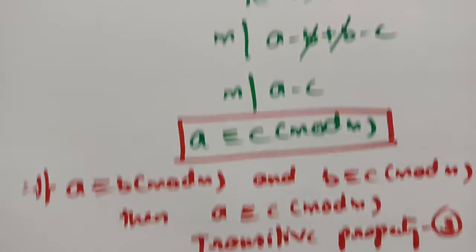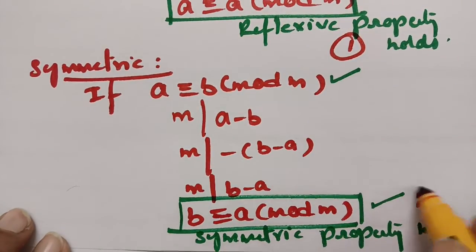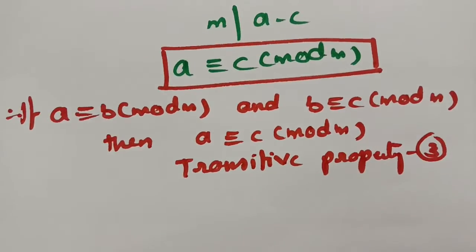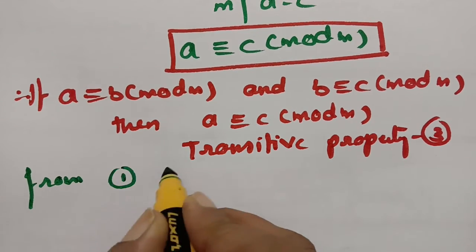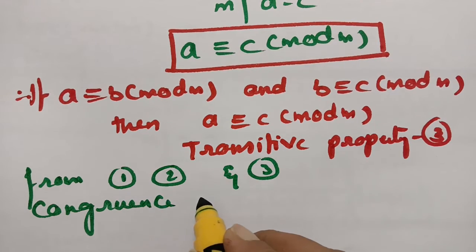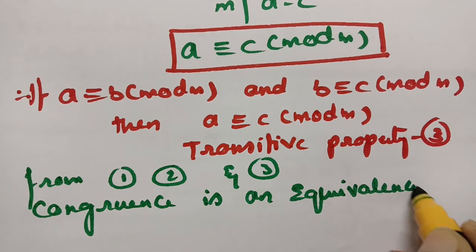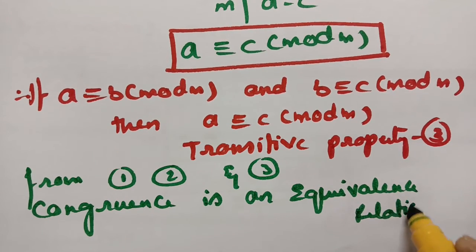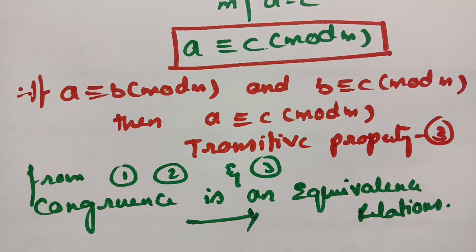I have shown the reflexive property as (1), the symmetric property as (2), and the transitive property as (3). From (1), (2), and (3), we conclude that the congruence relation is an equivalence relation — since all three properties, reflexive, symmetric, and transitive, hold. This is how the property of congruence works out.